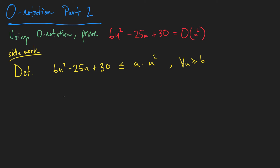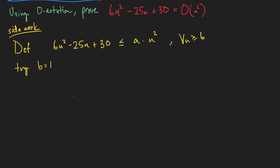Where do we go from here? Let's just try some things. Let's try B equal to 1 and see where that takes us. If B is equal to 1, then we're saying that for all n greater than or equal to 1, we're going to try and complete this. Let's try and find some A.